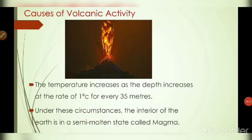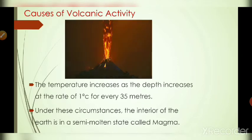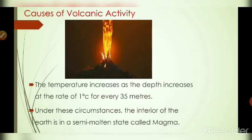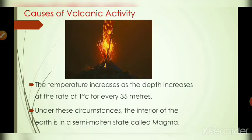Next, we are going to see the causes of volcanic activity. We are located on the surface of the earth, but at depth, the temperature increases 1 degree Celsius every 35 meters. In those circumstances, the rock in the interior of the earth becomes semi-molten, which is called magma. That magma comes to the surface of the earth and is called lava. The study of volcanoes is called volcanology, and the people who study volcanoes are called volcanologists.